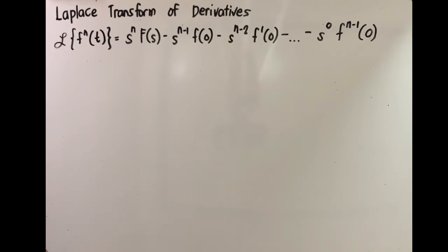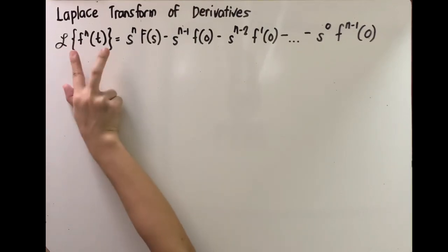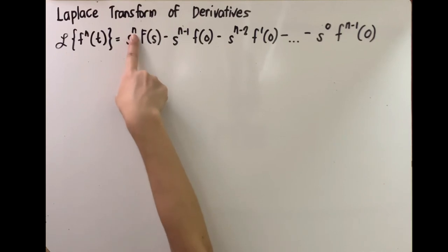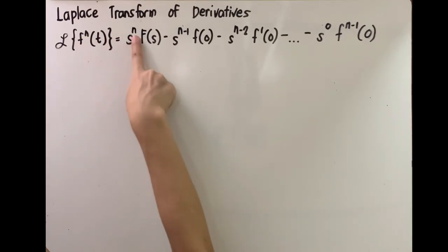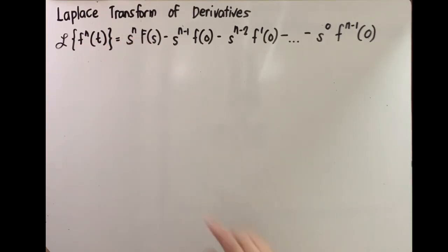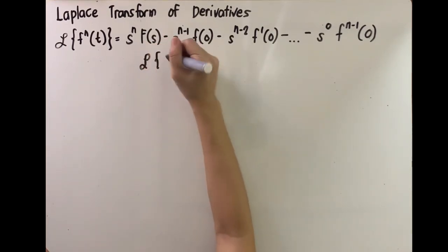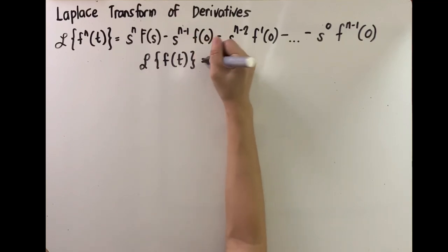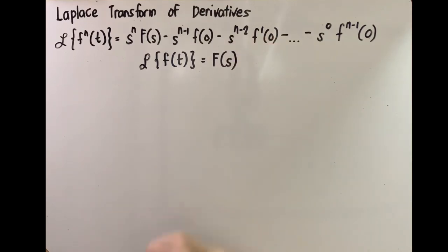According to the general formula, to take the Laplace transform of the n-th derivative of a function of t, that would be equivalent to s raised to n, where n is the same as the order of the derivative. So if you have a second derivative, this will be s raised to 2. F of s is the Laplace transform of the original function given to us, transformed into a subsidiary equation F of s.